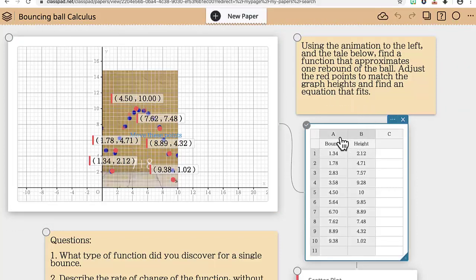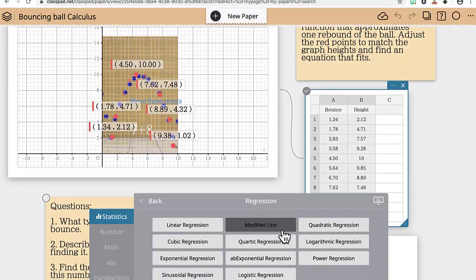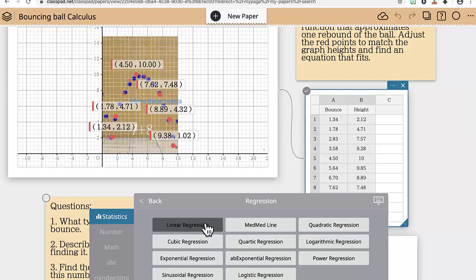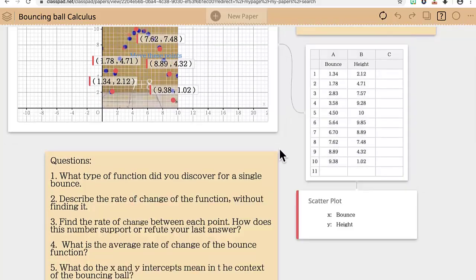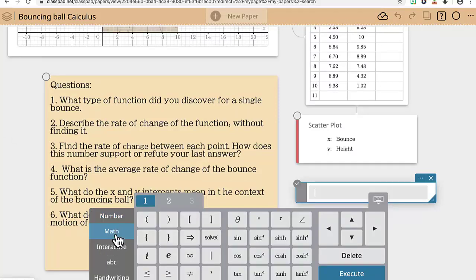So again, highlighting A and B, finding a regression equation, finding a quadratic regression for this curve, using that information to then create a derivative for this function.